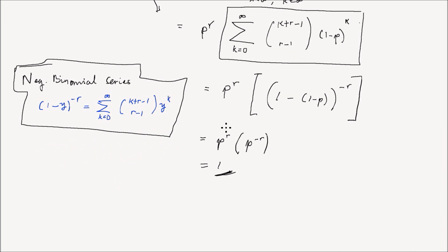Let me split this lesson into two — it's already 15 minutes. In the next part of this lesson, we will derive the expectation, the variance, and the MGF of the negative binomial distribution.